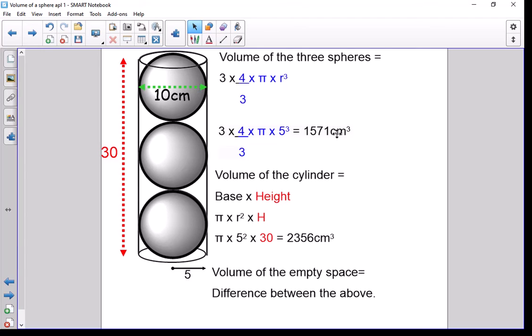So when we take away those two values, we know that there is 785 centimeters cubed of empty space.